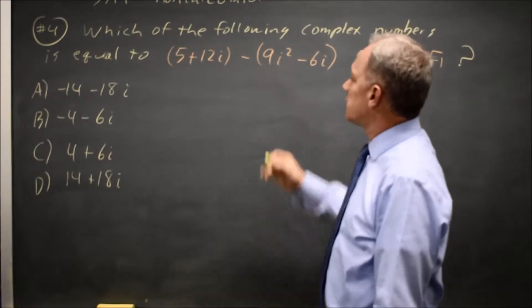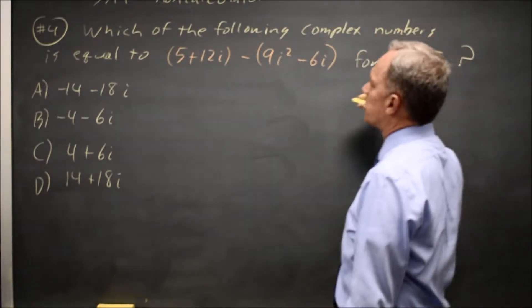And we have an i squared here, so we're going to have to use the fact that i is the square root of negative one.